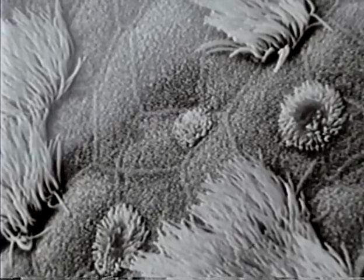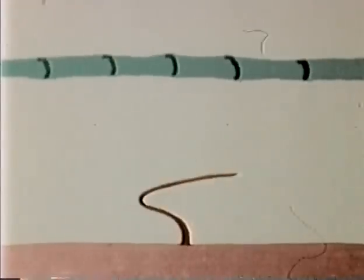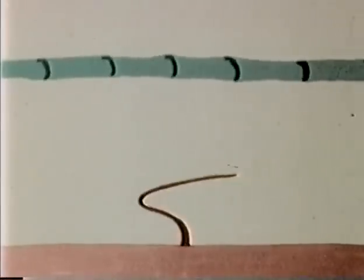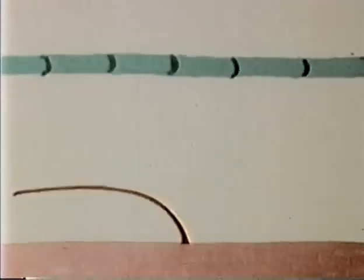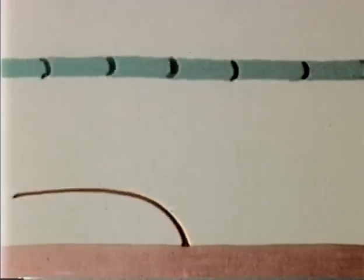Now we shall see how they work. This animated diagram represents in a simplified way the beating of a single cilium. Notice that it is straight on the forward or effector stroke and contacts the mucus blanket, and then bends down for the return or recovery stroke.